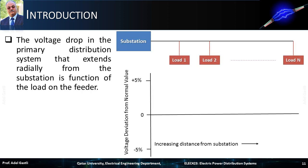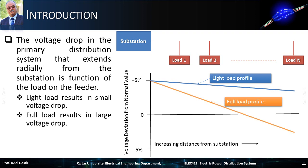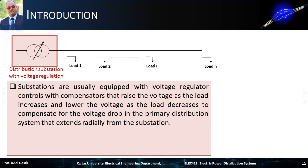It is worth mentioning that the voltage drop in the primary distribution system that extends radially from the substation is a function of the load on the feeder. Consequently, light load results in small voltage drop, while full load results in large voltage drop. Substations are usually equipped with voltage regulator controls with compensators that raise the voltage as the load increases and lower the voltage as the load decreases, to compensate for the voltage drop in the primary distribution system that extends radially from the substation.